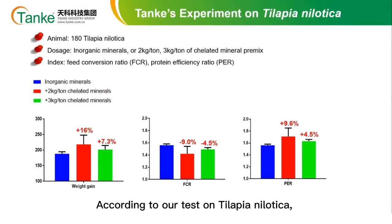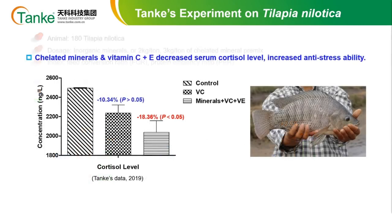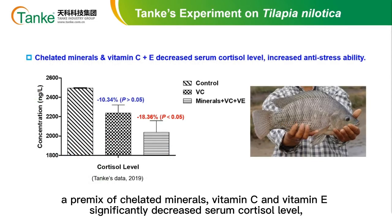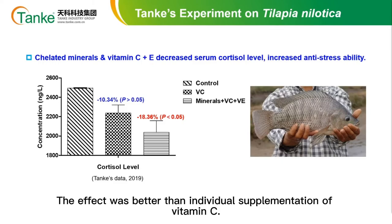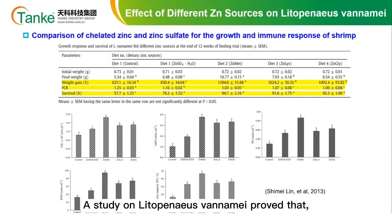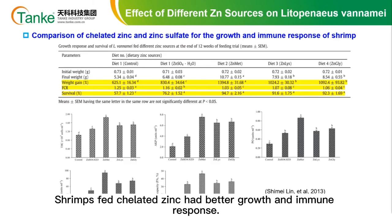According to our test on Nile tilapia, compared to inorganic minerals, Tanki's chelated minerals significantly increased weight gain and protein efficiency ratio, and decreased FCR. In another test in 2019, a premix of chelated minerals, vitamin C, and vitamin E significantly decreased serum cortisol levels and increased anti-stress ability — the effect was better than individual supplementation of vitamin C alone. A study on Litopenaeus vannamei proved that chelated zinc significantly increased weight gain and survival rate, decreased FCR, and shrimps fed chelated zinc had better growth and immune response.